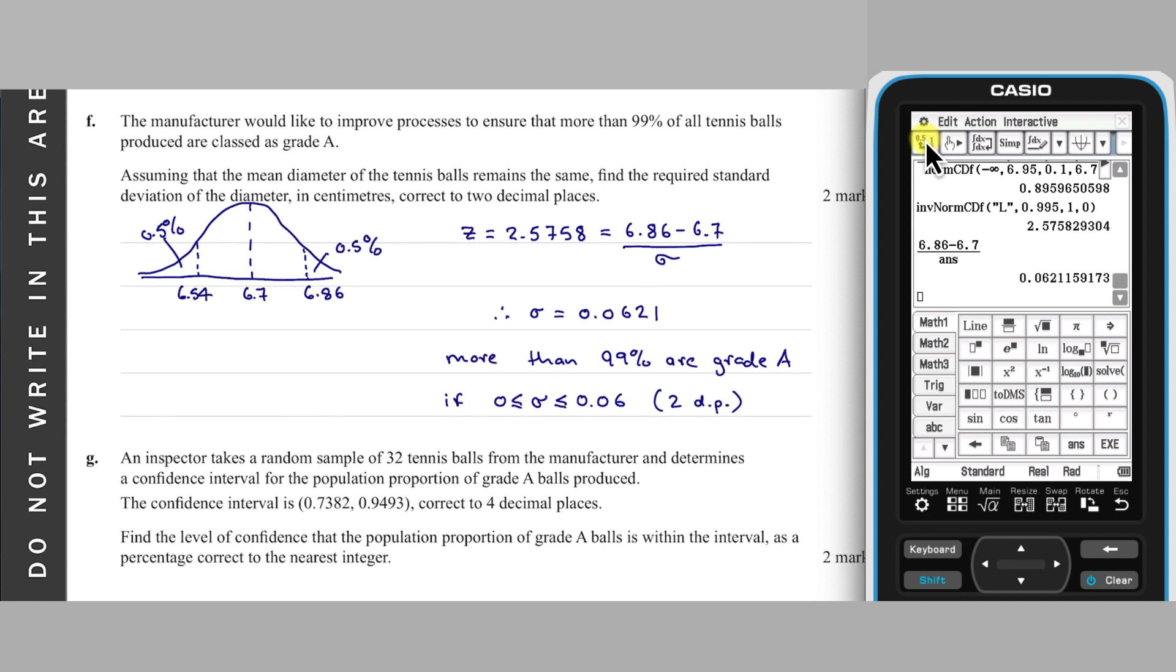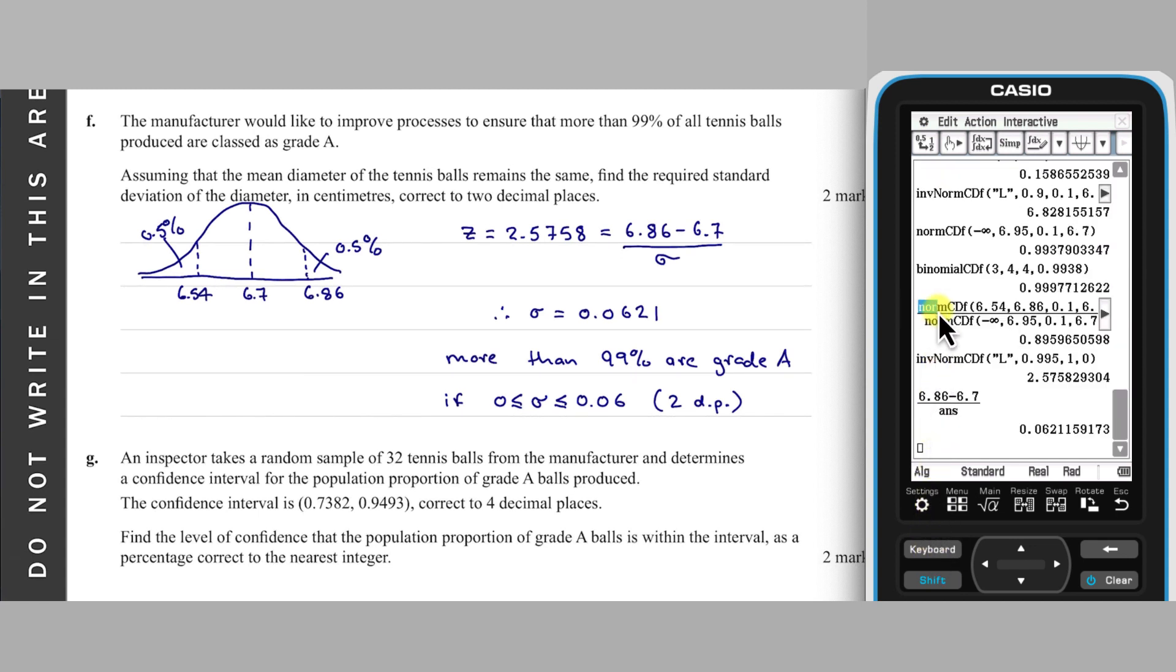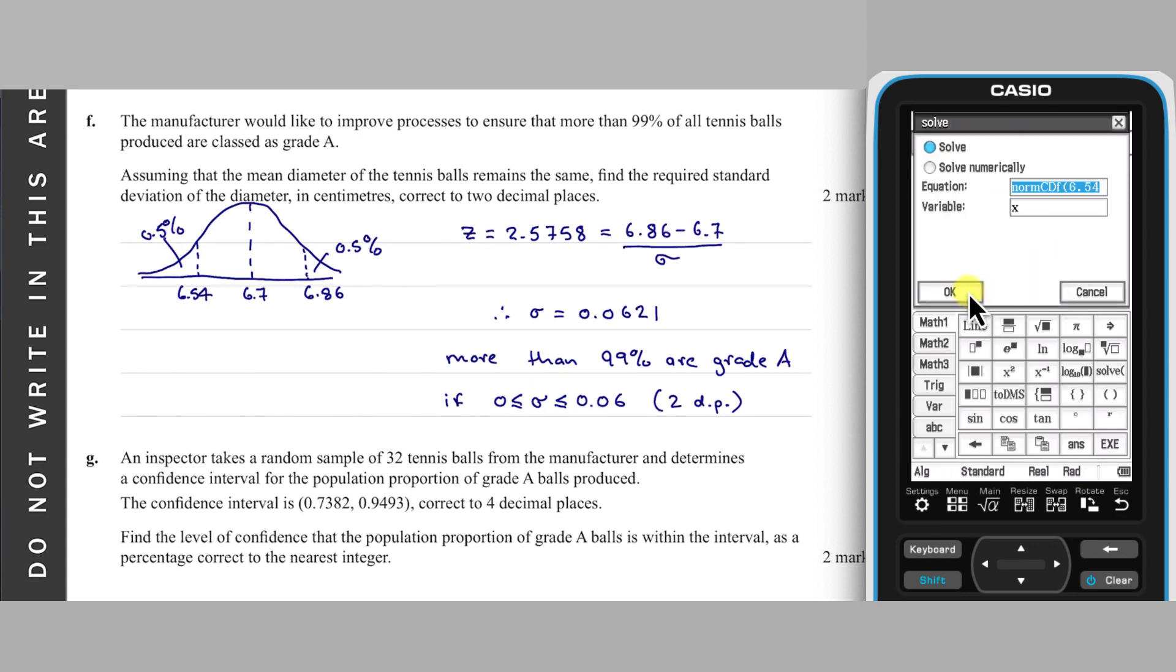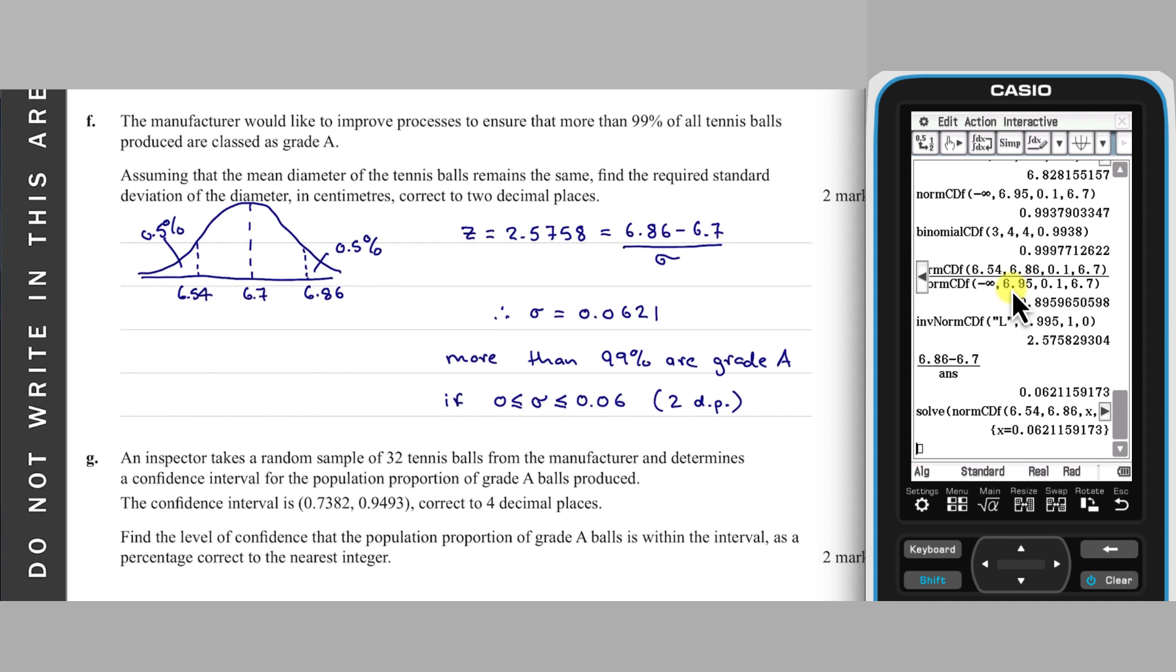An alternative to using the Z-score formula is to turn a norm CDF command into an equation for an unknown sigma. To do this, I'm going to grab the norm CDF command from the numerator of part E, because that calculates the probability of a grade A tennis ball, pop it into a new line, replace sigma with X, set it equal to 0.99, and solve. This efficiently obtains the sigma value of 0.0621. As this question is worth two marks, working is required, so this solution method should be accompanied by some working, like a diagram of the distribution with probabilities shown.